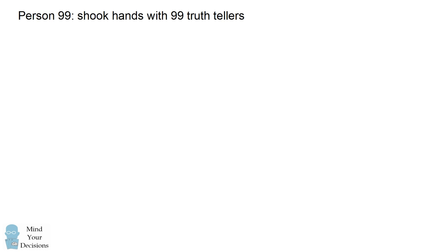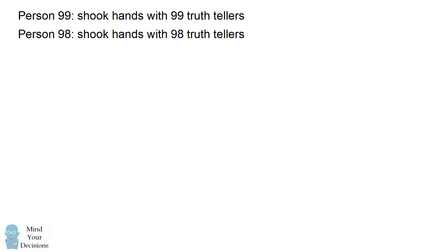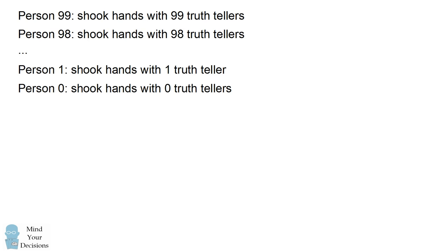We'll start by labeling each person. We'll say person 99 is the one who replied to have shaken hands with 99 truth-tellers. Similarly, person 98 said to have shaken hands with 98 truth-tellers. We'll continue this labeling all the way down to person 0, who shook hands with 0 truth-tellers.